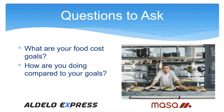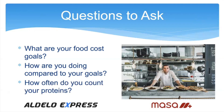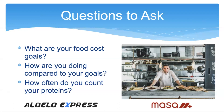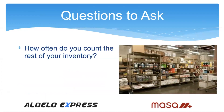Ask how often they count their proteins. Depending on the individual restaurant, they may count daily or weekly — not monthly, that's too long. Ask how often they count the rest of their inventory. If they're counting proteins daily, they generally count everything else weekly. Asking these kinds of questions makes you come across as an expert.